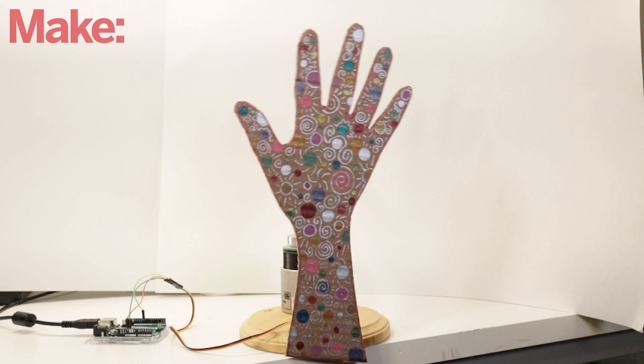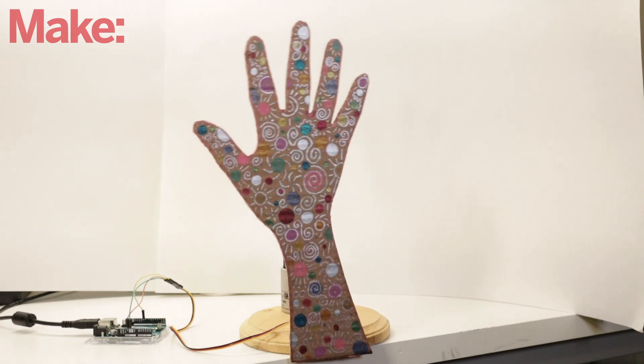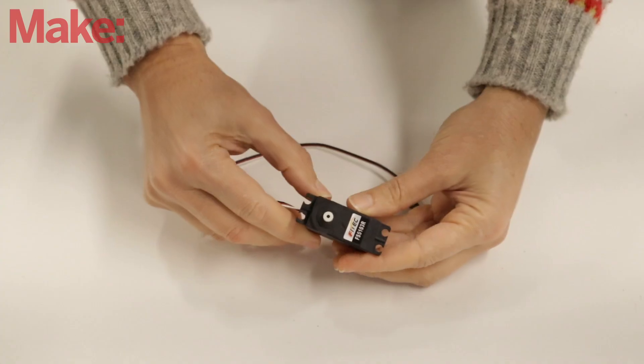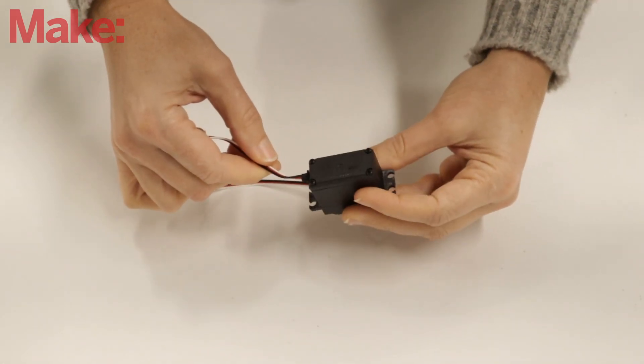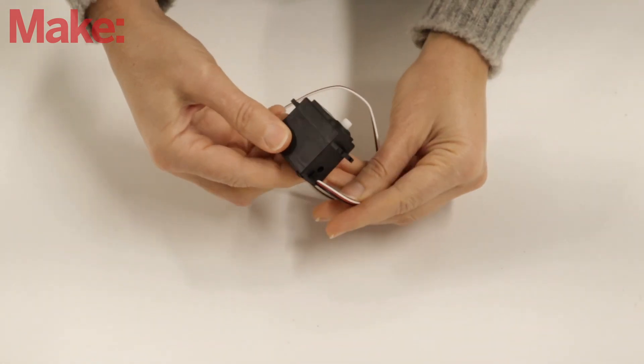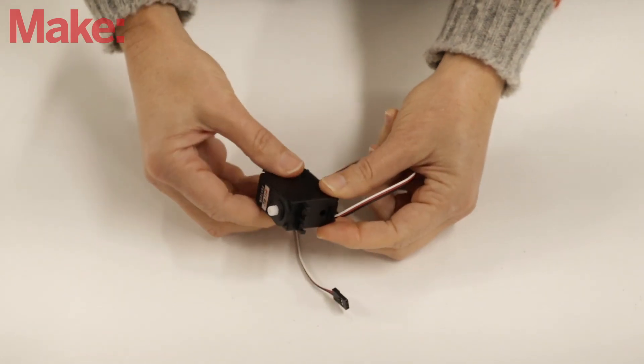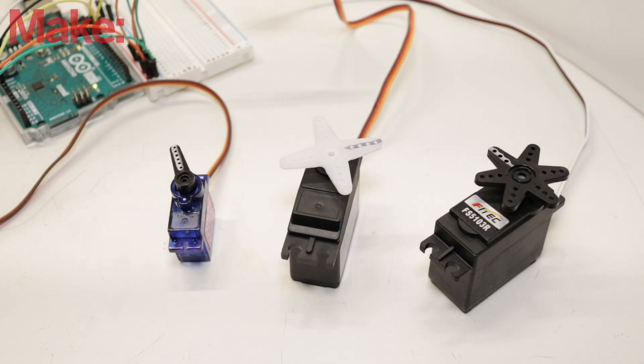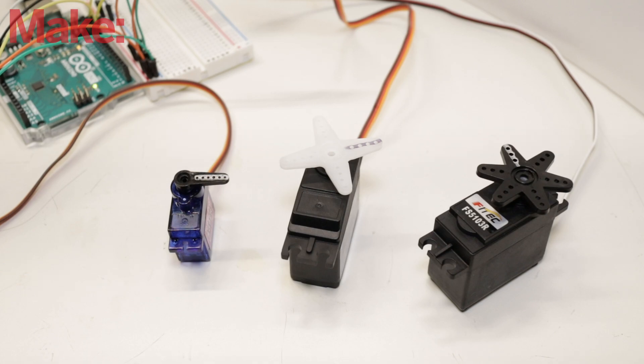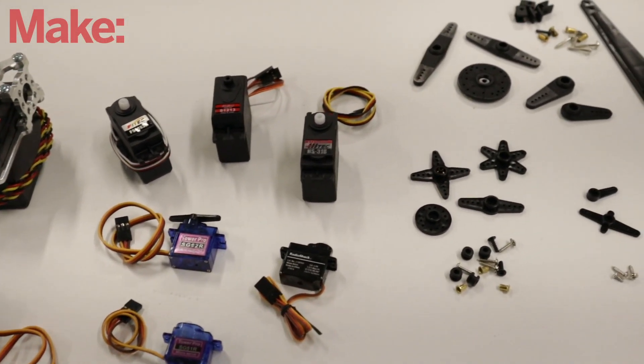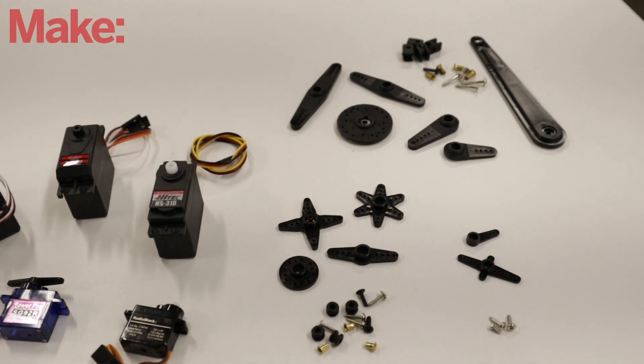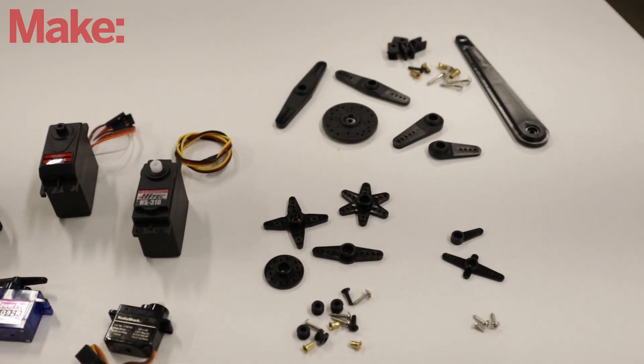One of the most exciting things about building with electronics is making something move. A quick and easy way to do that is to use a servo. Servos are small motors with gears and some electronics wrapped up in a convenient plastic case, and they move back and forth between two angular positions. Most have a range of 180 degrees, though there are servos with smaller ranges, and there are also continuous rotation servos that go all the way around.